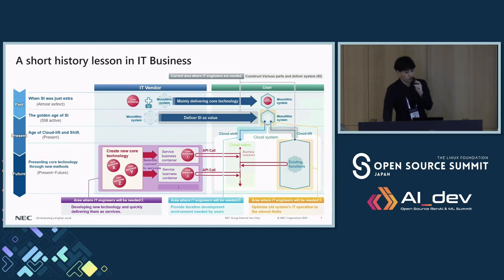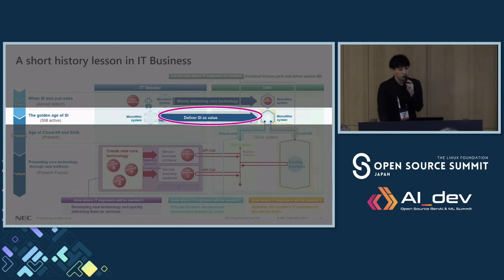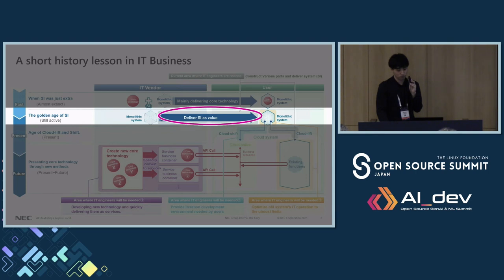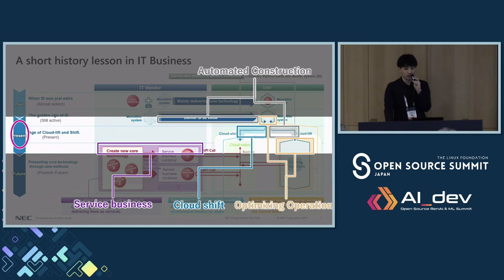As demands grew, systems became more complex, requiring multiple machines to work together. Exastro was born here, at the golden age of the system integration, or SI business. It was designed with the purpose of optimizing the project at hand by allowing engineers to automate repetitive and time-consuming tasks. Fast forward to where we are today — almost everything has transitioned to the cloud, reflecting the industry's shift towards scalability and flexibility.